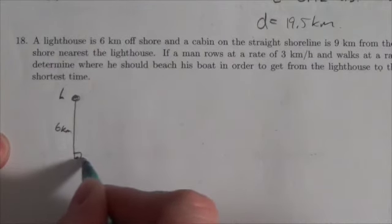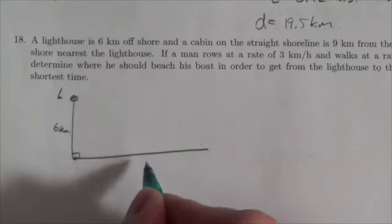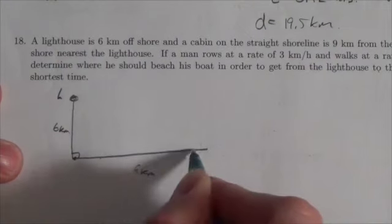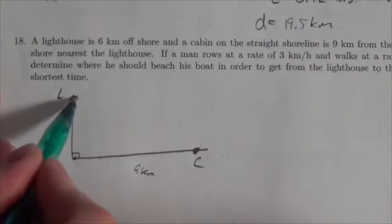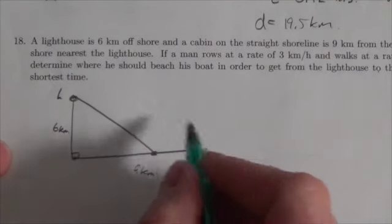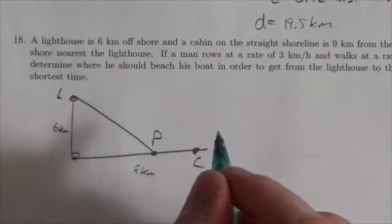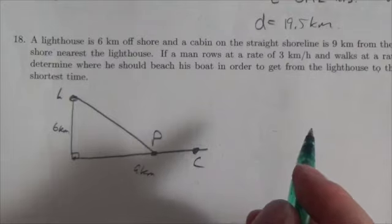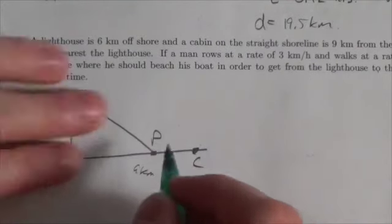And then if we go along that shore nine kilometers, there is his cabin. So the question is, where does he land? At what point does this guy land if he can row at three kilometers an hour and he can walk at five kilometers an hour?